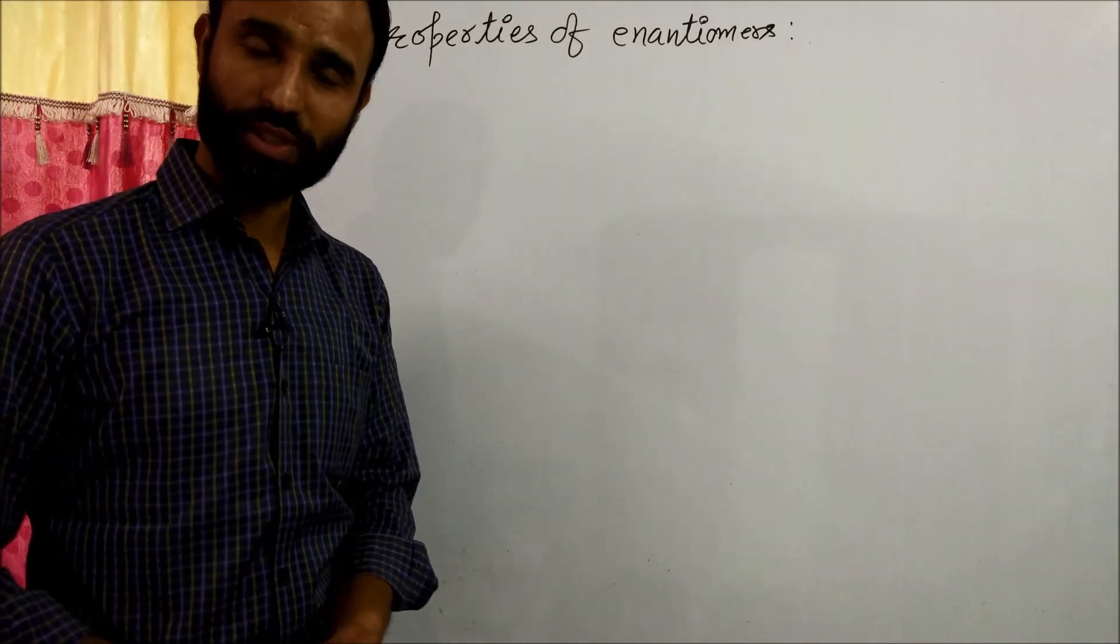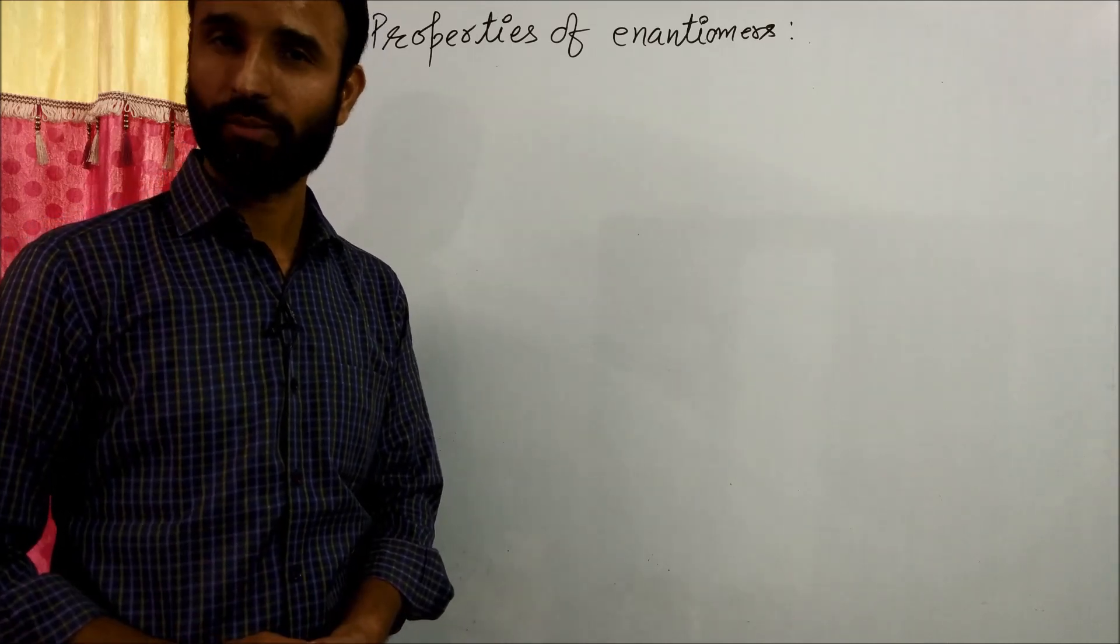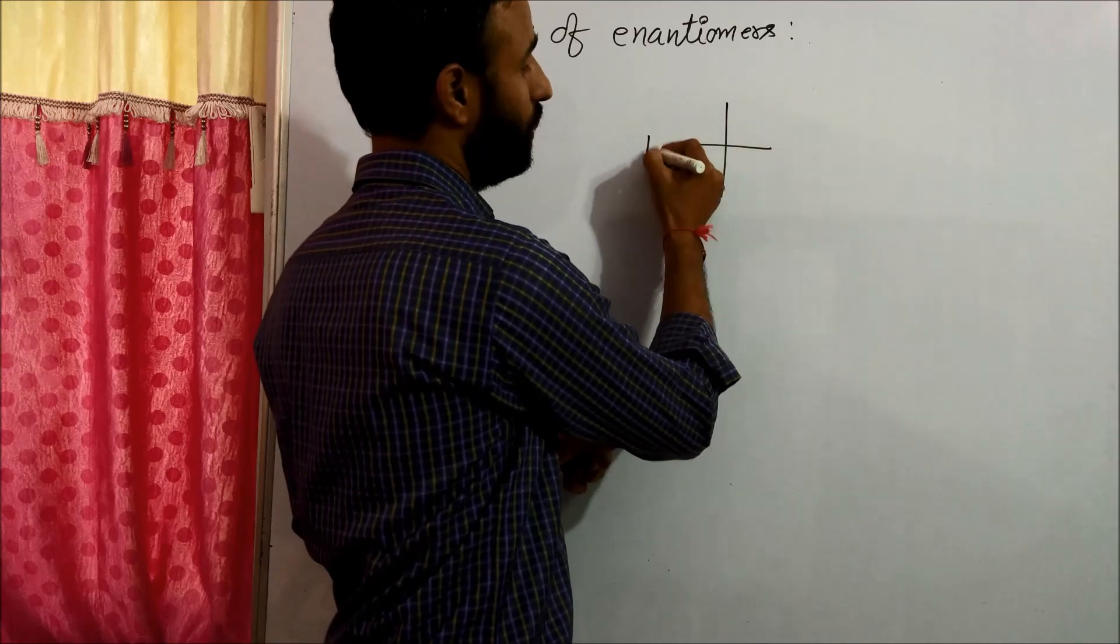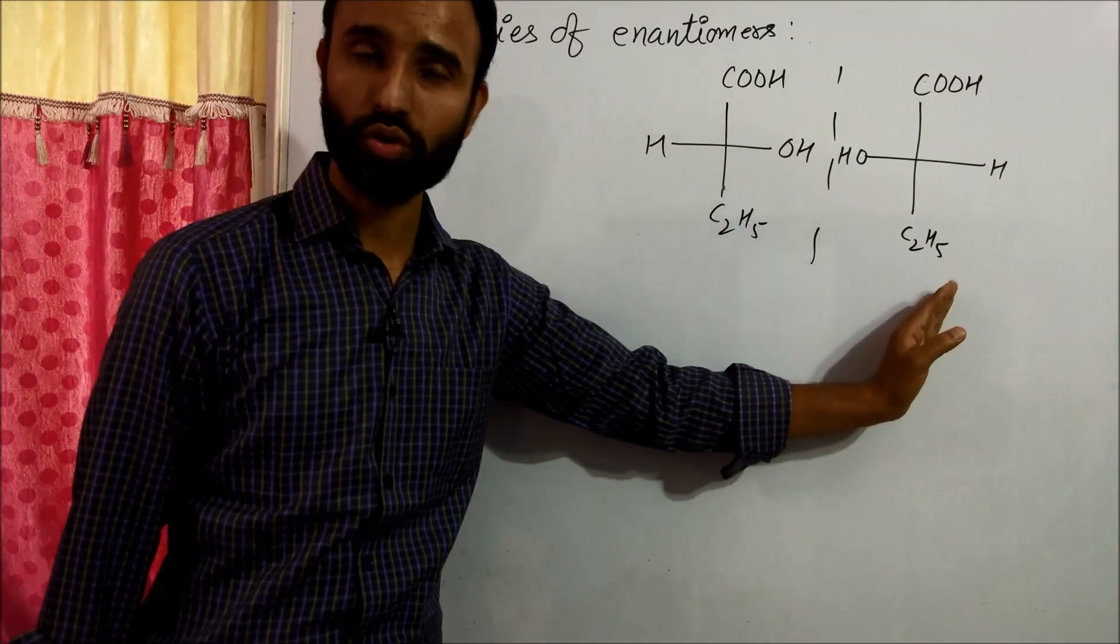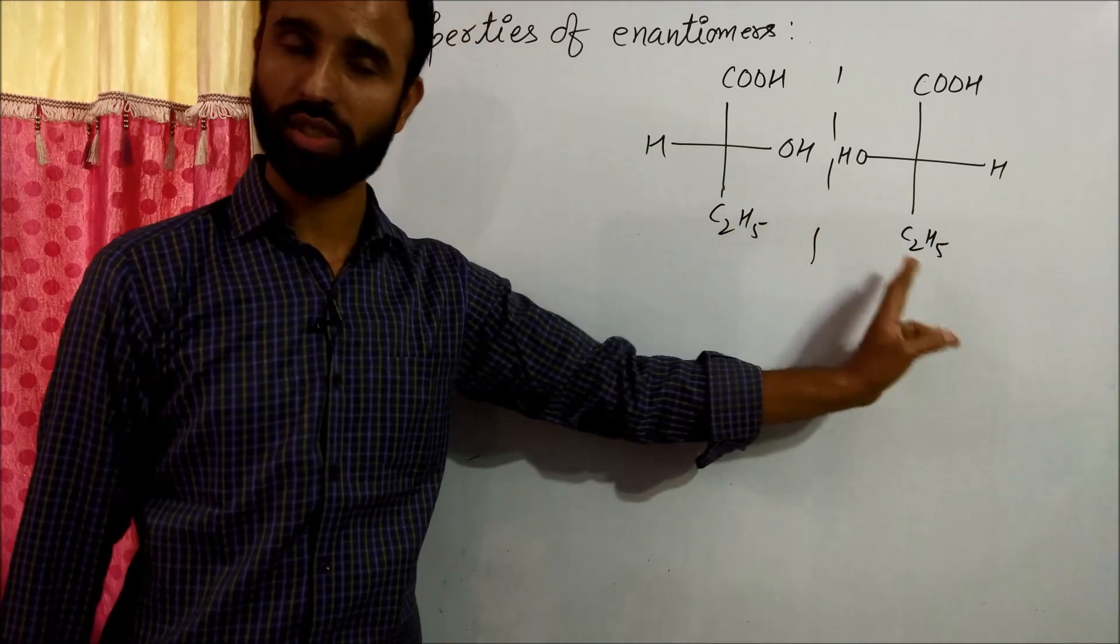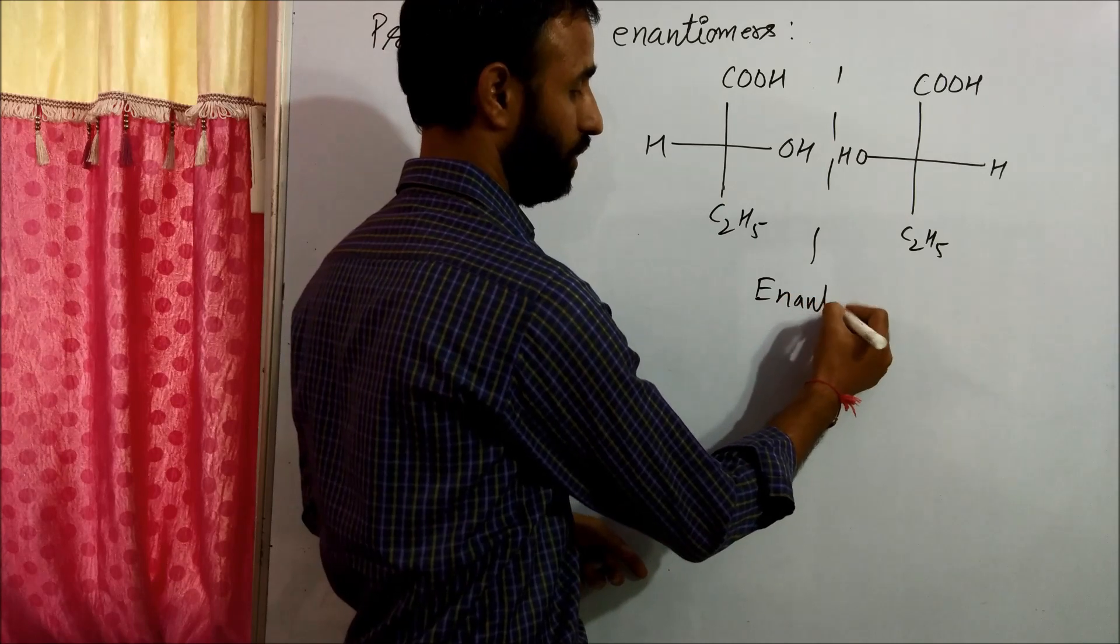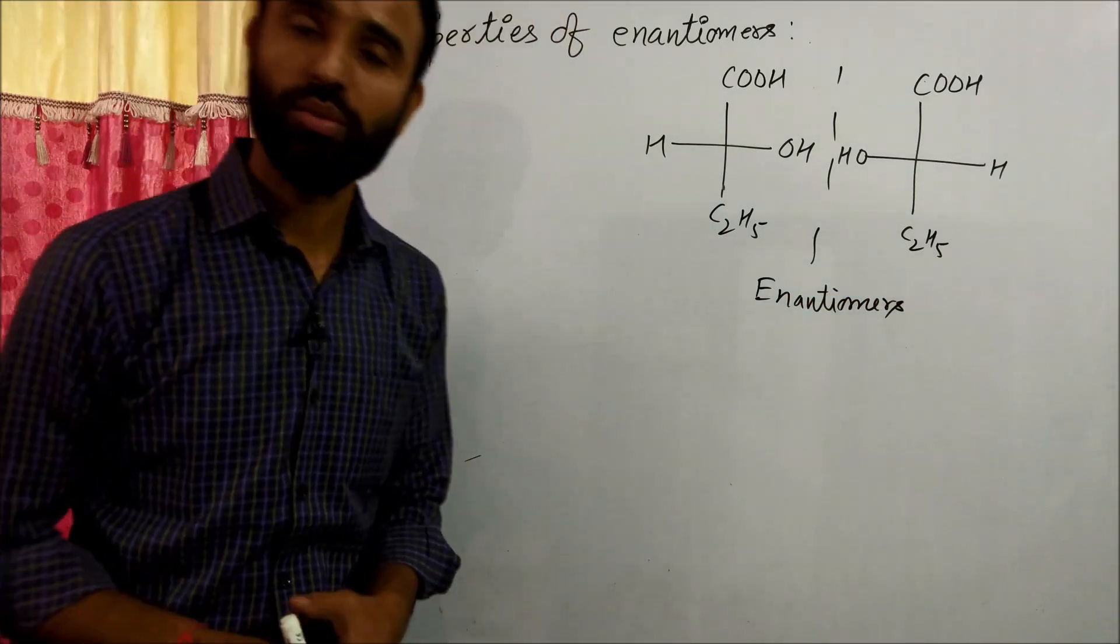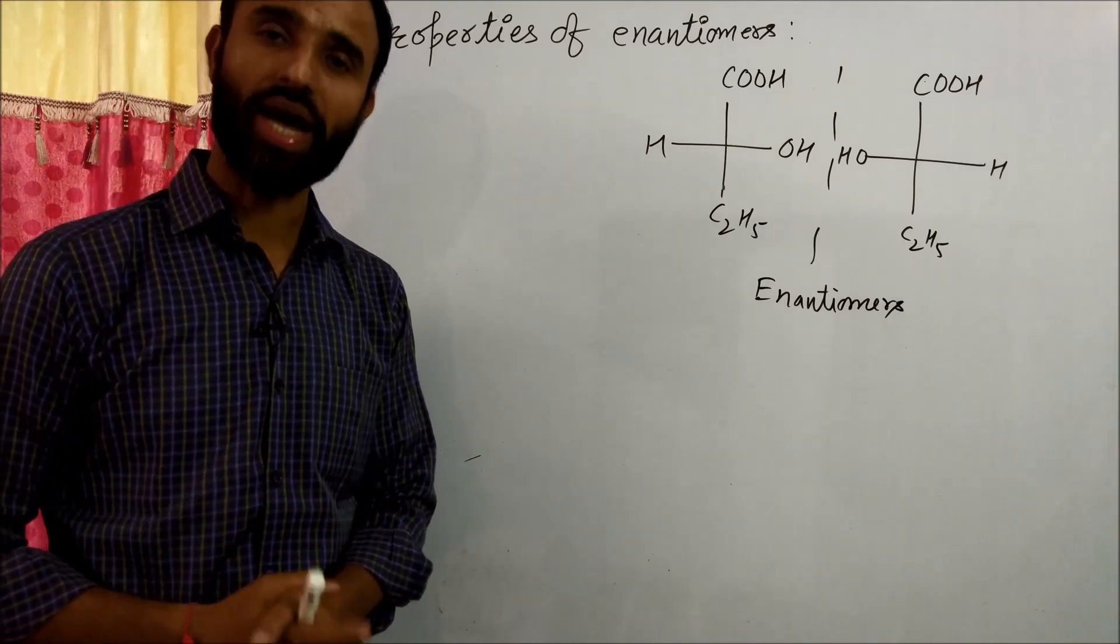Properties of enantiomers. You know what are enantiomers? These are non-superimposable mirror images. This one chiral center. These are non-superimposable mirror images and that's are known as enantiomers. Enantiomers have the same chemical properties as well as physical properties except two.